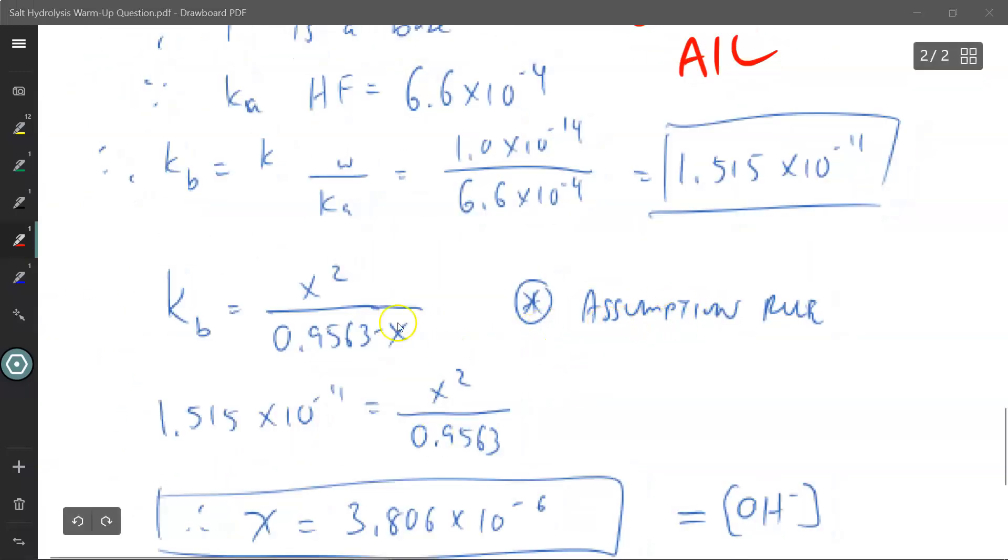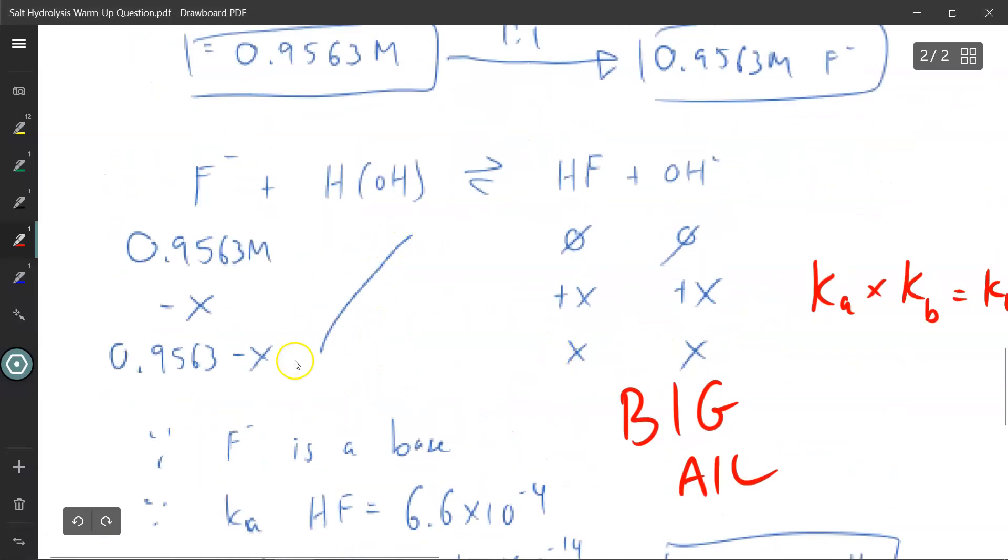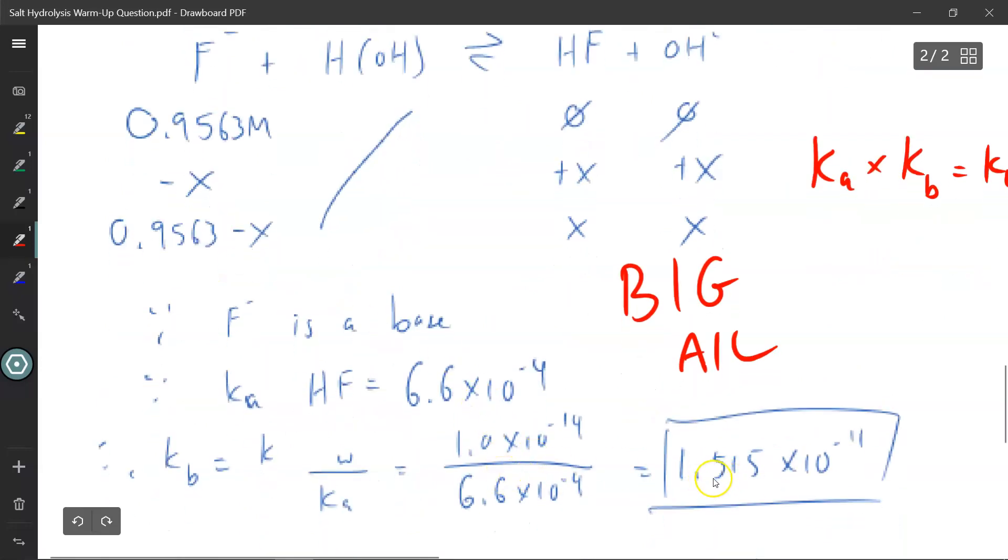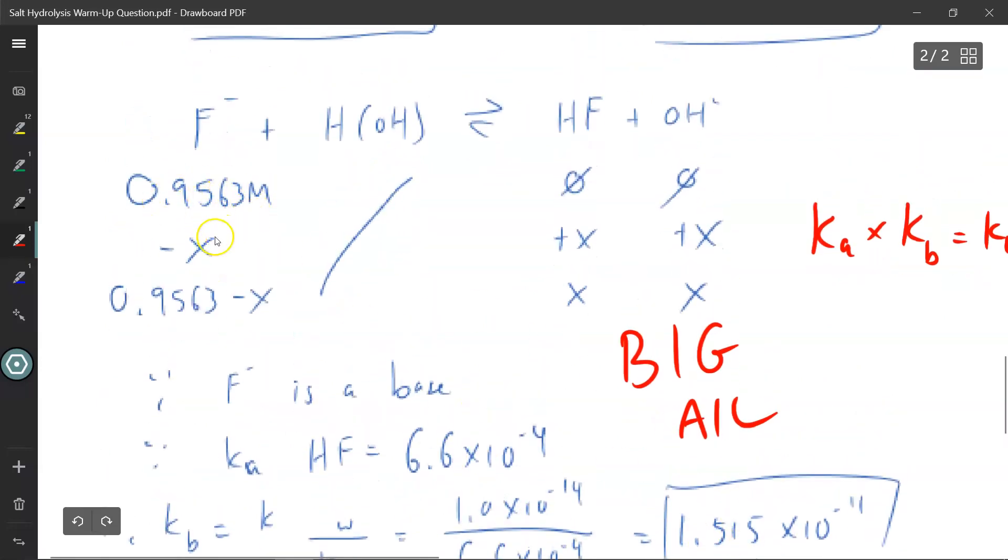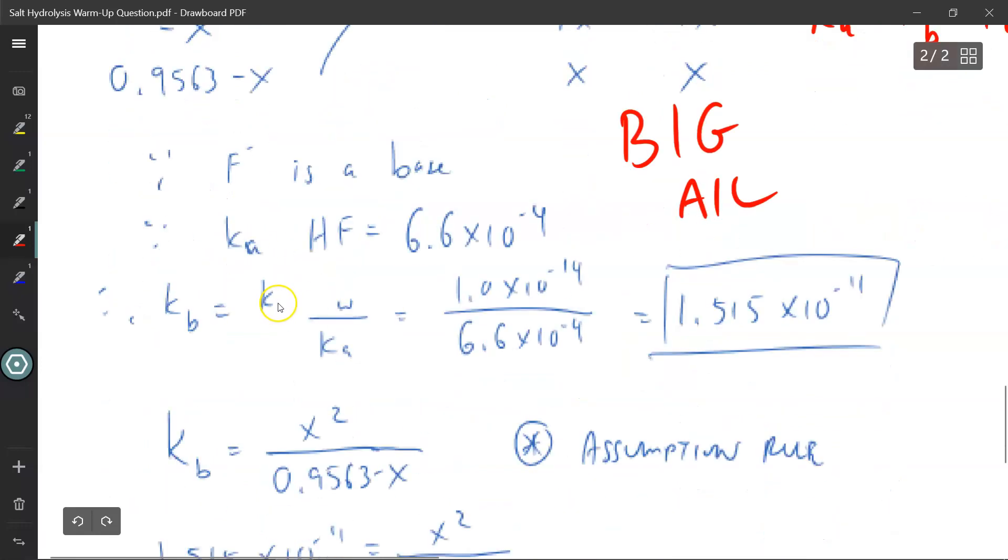Now to simplify things, I'm going to use the assumption rule. You don't have to, you can definitely use the quadratic equation to solve for this, but it certainly simplifies things a lot. So what I did was I took the initial concentration divided by my Kb value, and I found that the value was greater than or equal to 1,000. So that means my x value is negligible.